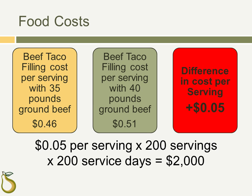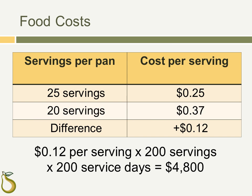Costs are also based on the assumption that a recipe will yield a certain number of servings. The taco filling recipe is specified to yield 25 servings per pan when using a number 16 scoop, or a quarter cup. If a serving staff member used a number 12 scoop — one-third cup instead — the pan yield drops to 20 servings instead of 25. Suddenly the cost per serving rises to 12 cents, and if the same mistake was made every day over the course of a school year, this could add up to almost $5,000 in excess food cost.